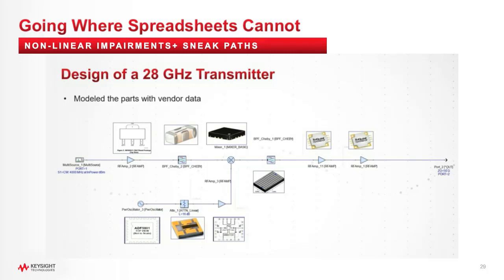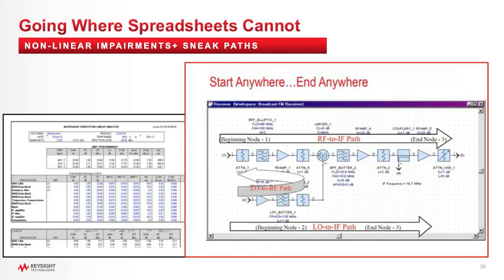On the frequency-domain side, starting at level one, we modeled a 28 GHz transmitter taking devices from different vendors — power amplifiers, mixers, filters — and brought in data from data sheets or measured data. We can do analysis on any path from the LO through to the RF and IF, looking at cascaded signal, noise, and compression characteristics. Traditionally a lot of system design is done with spreadsheets, but spreadsheets have a hard time modeling mismatch effects, nonlinear effects, and broadband signals.